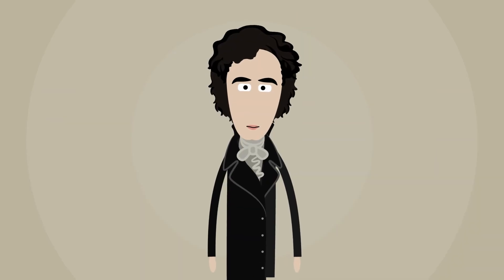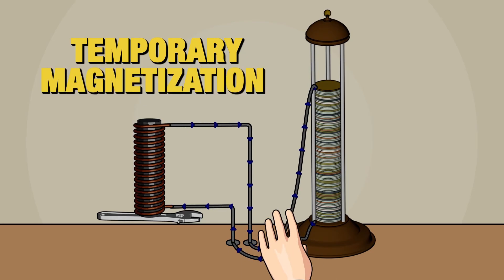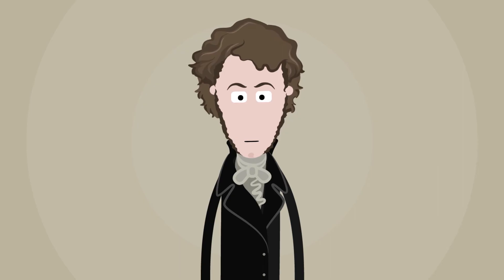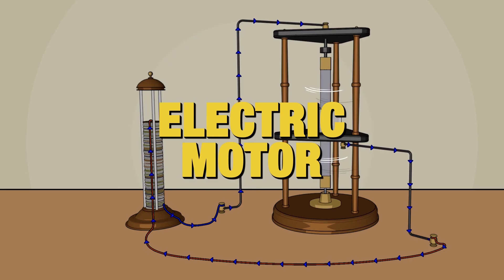By placing with the physicist Arago a soft iron cylinder in the centre of the helical wire, which he calls a solenoid, he discovers the temporary magnetization which is at the base of the electromagnet. Ampère also makes the rotation of a magnet around its axis, which already prefigures the electric motor.